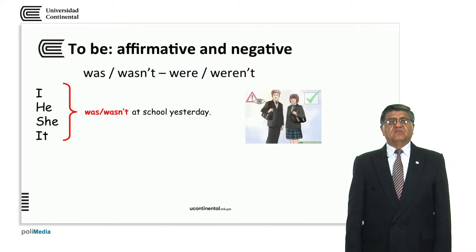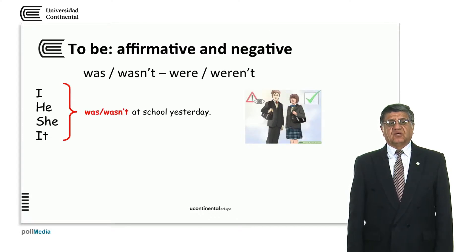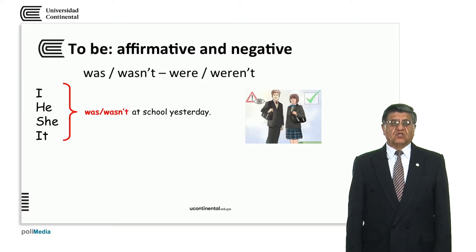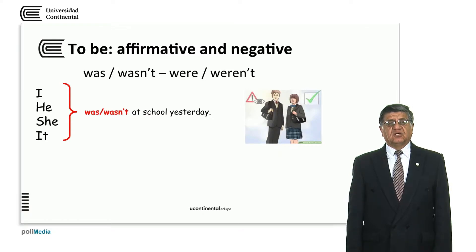In the affirmative and negative, we have the verb to be, which is quite important. We have 'was' for the singular, and 'wasn't' is the negative form of was. The plural form is 'were,' and the negative is 'weren't.' So we have: was, wasn't, were, weren't.